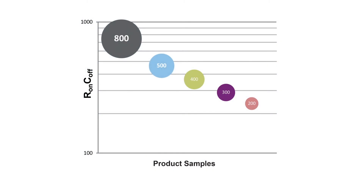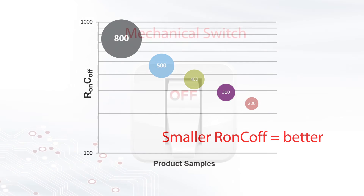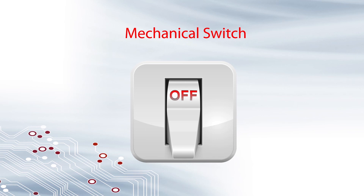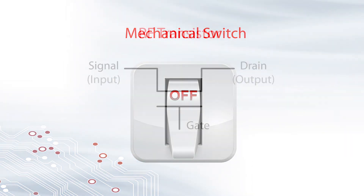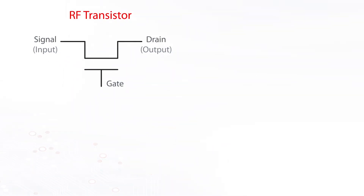R on C off is a figure of merit that is used to rate the performance of an RF switch. A mechanical switch's on-off state is determined by physically changing the switch's position. RF switches use an electrical input at the gate of the RF transistor to turn on or off.